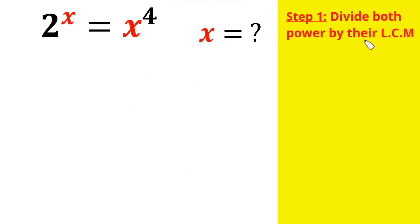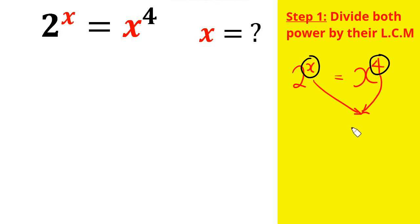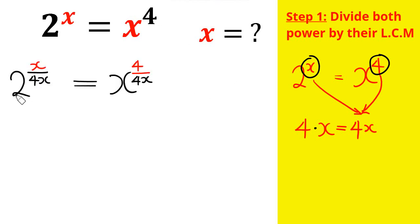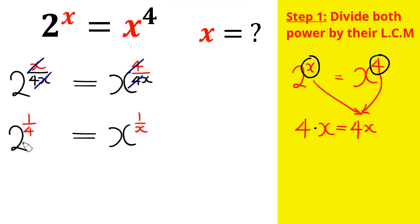So what are we going to do? Step number one: divide both powers by their LCM — that is, their lowest common multiple. The LCM of x and 4 is just 4x. Therefore, dividing the powers by the LCM, we're going to have 2 raised by the power of x over 4x equals x raised by the power of 4 over 4x. We just divide the powers by their LCM, which is 4x.